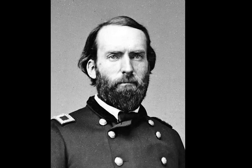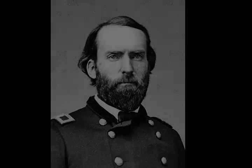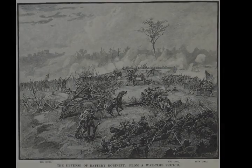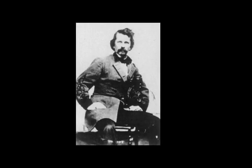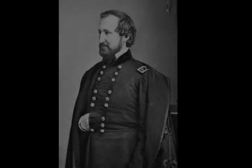A division on loan from the Army of the Tennessee, commanded by Brigadier General Thomas A. Davis, included the brigades of Brigadier Generals Pleasant A. Hackleman and Richard J. Oglesby, and Colonel Silas D. Baldwin. A second division on loan, commanded by Brigadier General Thomas J. McKean, included the brigades of Brigadier General John MacArthur and Colonels John M. Oliver and Marcellus M. Crocker.